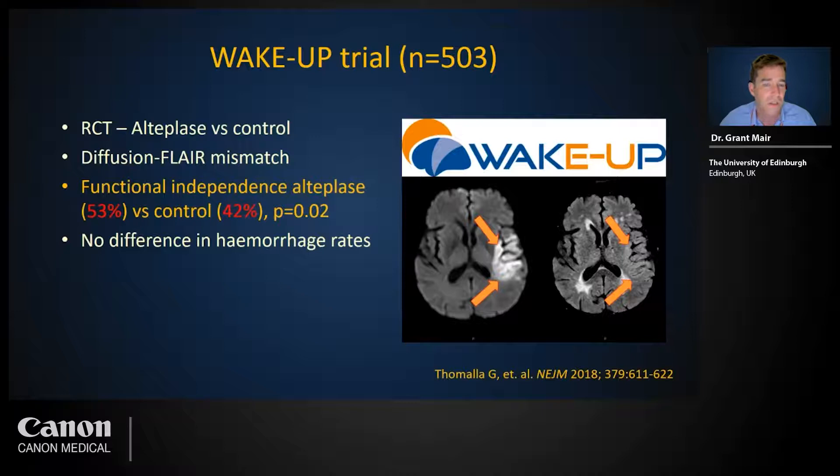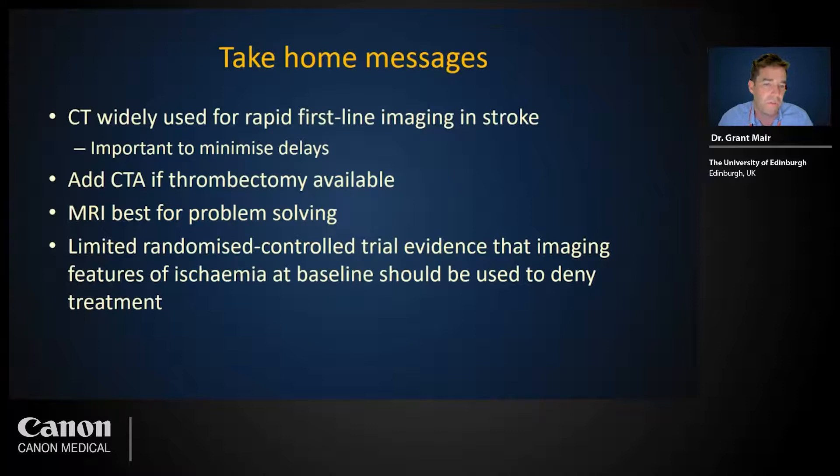In conclusion: CT is widely used for the rapid first-line imaging of stroke, but it is really important to minimize delays. We should add CTA if thrombectomy is available. MRI is best for problem solving. And finally, there is limited randomized controlled trial evidence that imaging features of ischemia at baseline should be used to deny patients treatments for stroke. Thank you for listening.